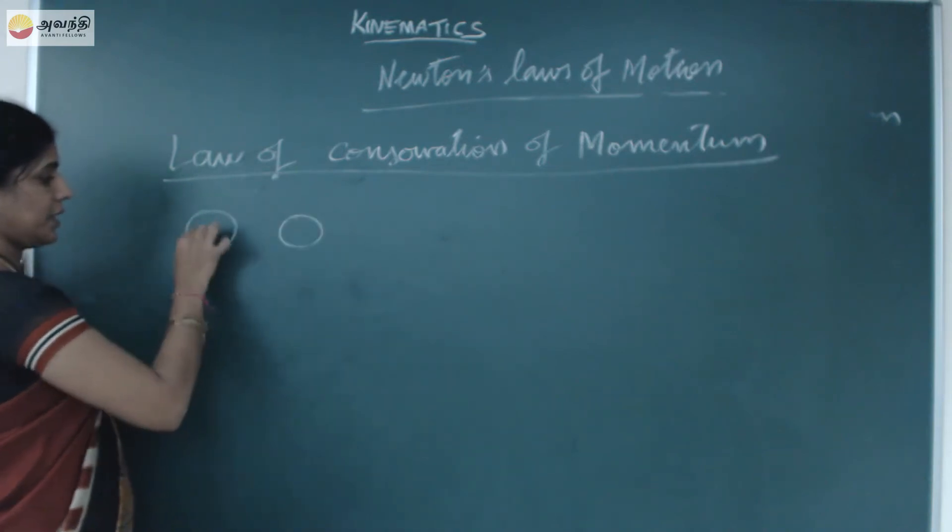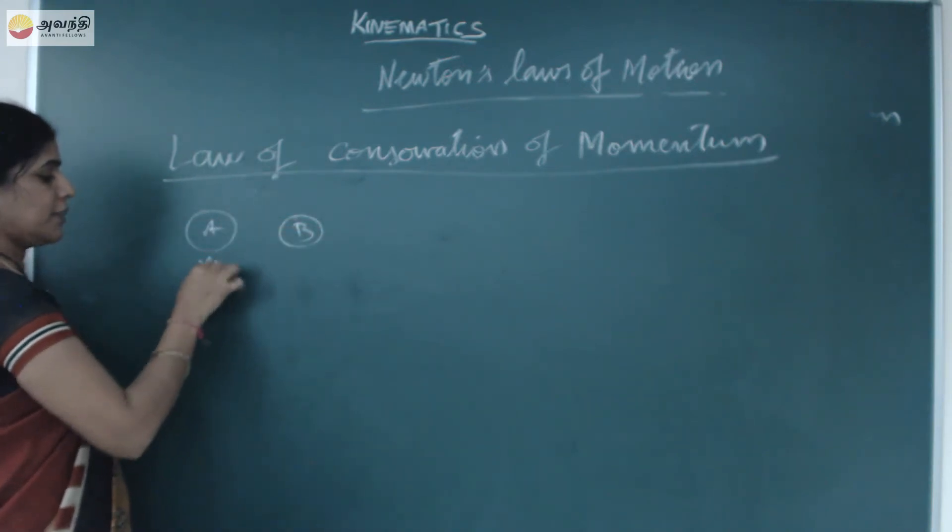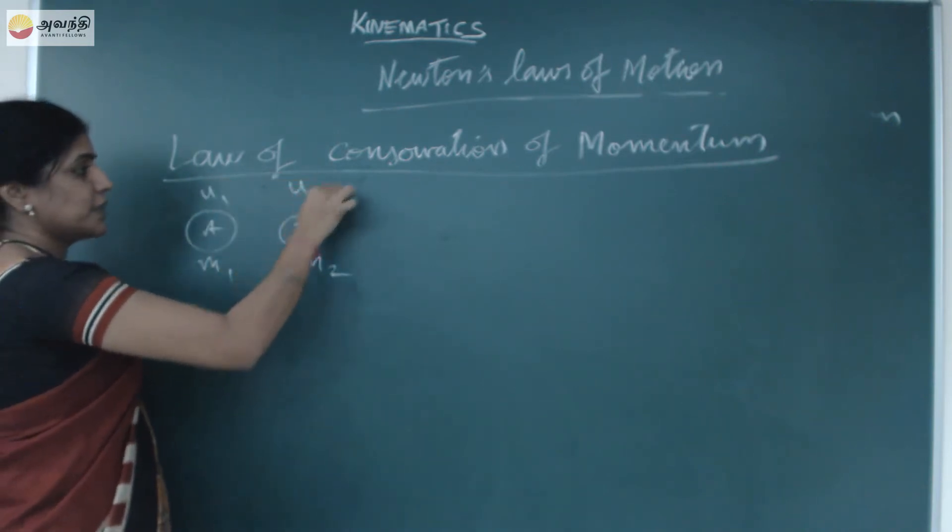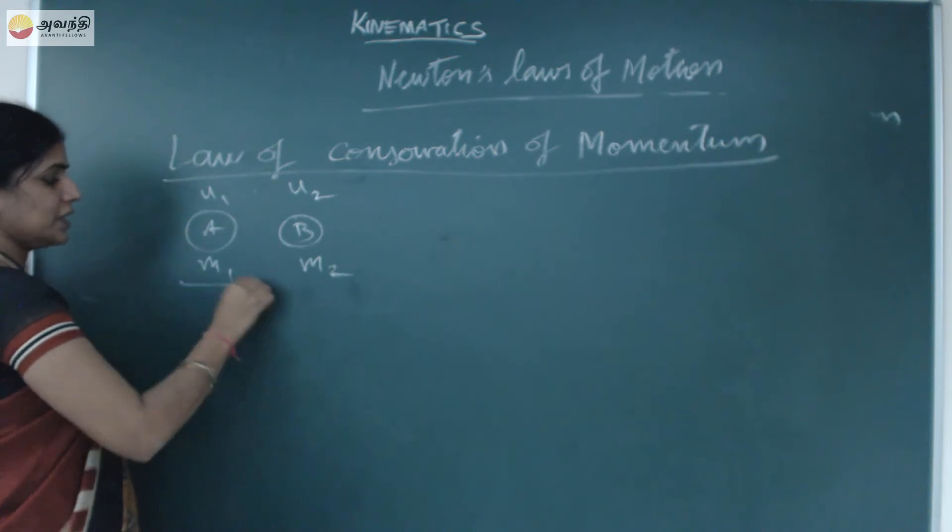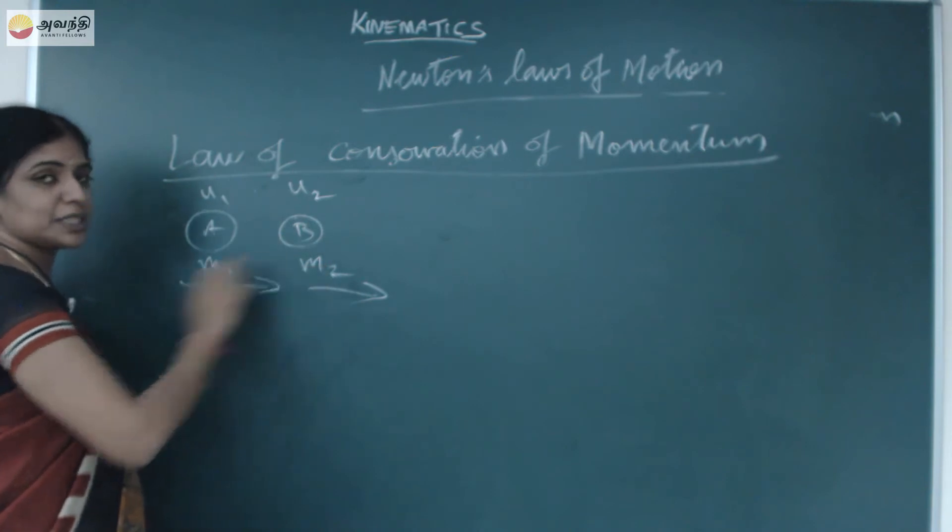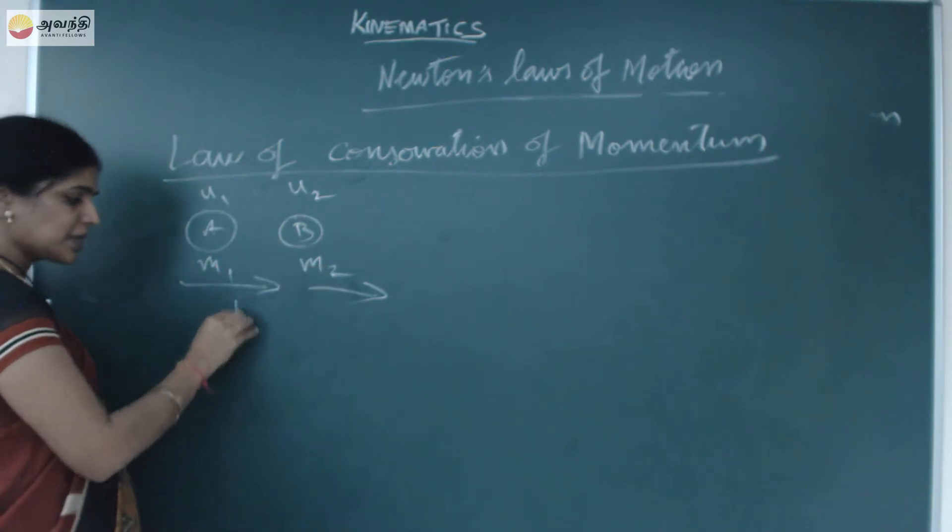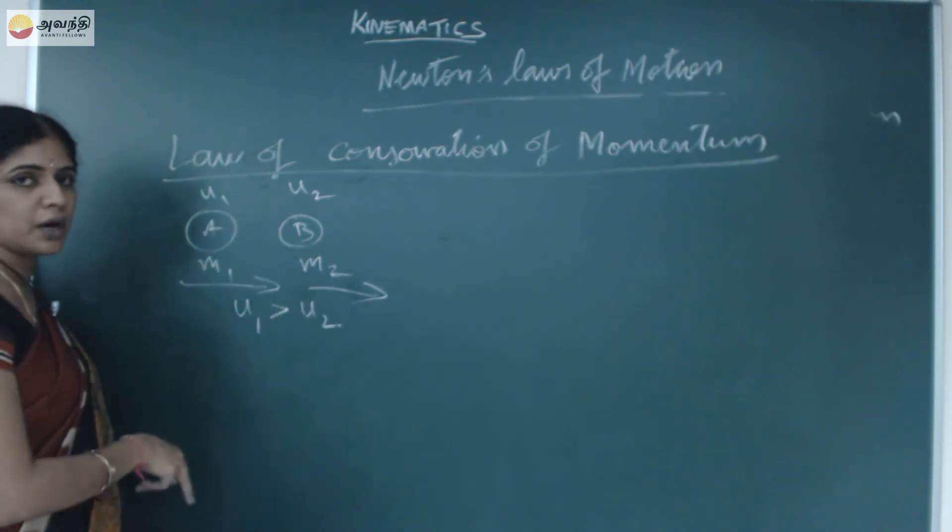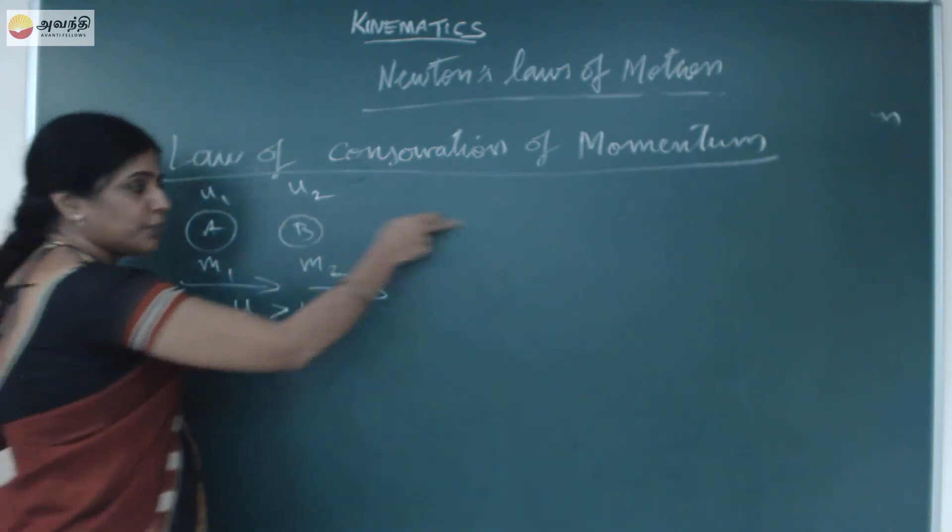For example, A and B. Let the masses of the two objects be m1 and m2. Let their initial velocities be u1 and u2. They are traveling in the same direction. This is A and B with masses m1 and m2. If I consider this velocity u1 is greater than u2, then they will collide.